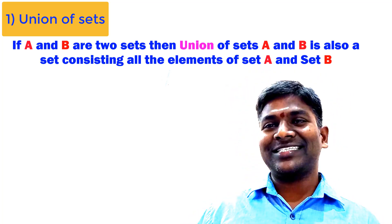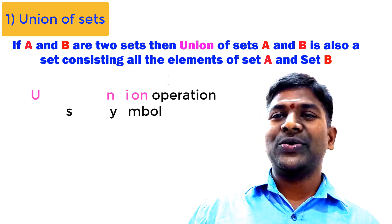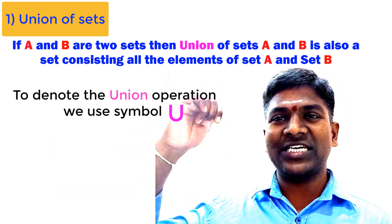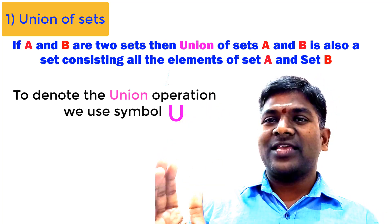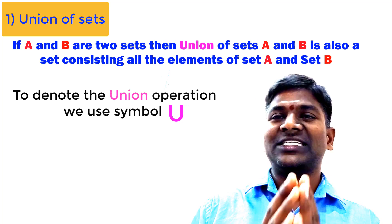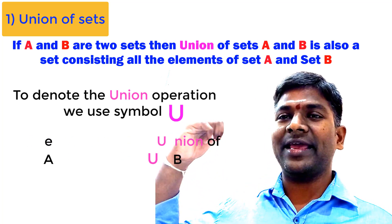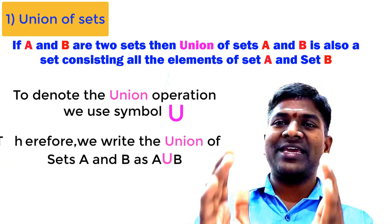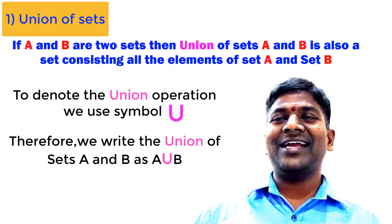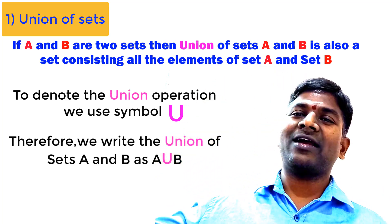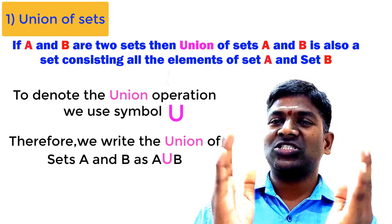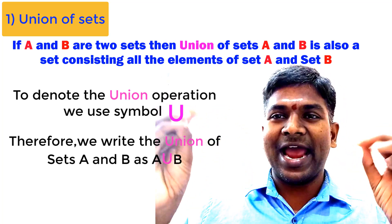Before going to the example, let us see the symbol of union. The symbol used for the operation union is U. When the union of A and B is calculated, union of A and B is denoted by A union B. Here, A union B is also a set. Elements of A union B are all the elements of A and all the elements of B. A union B is the set consisting of all the elements of set A and set B.